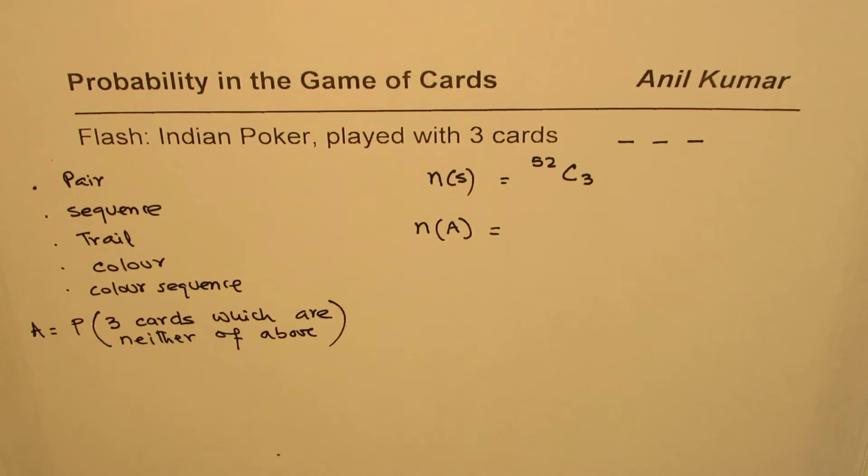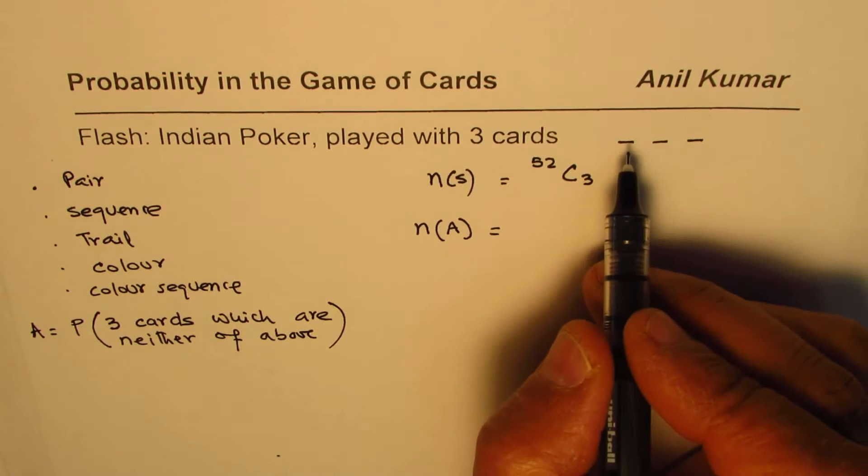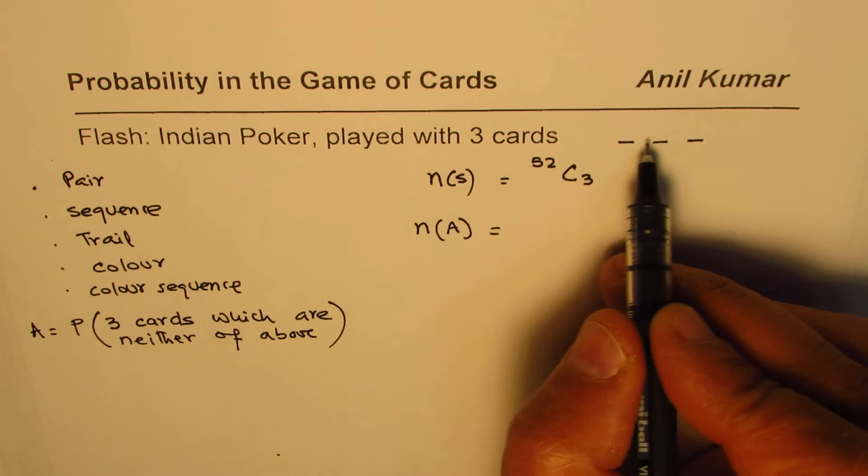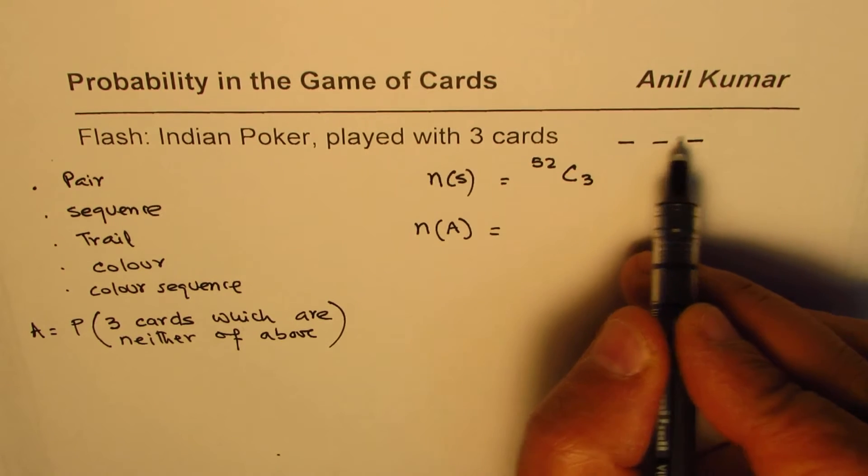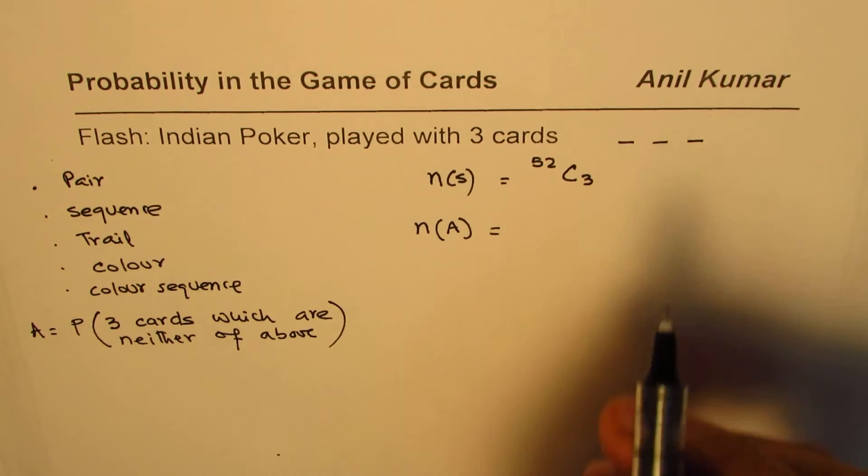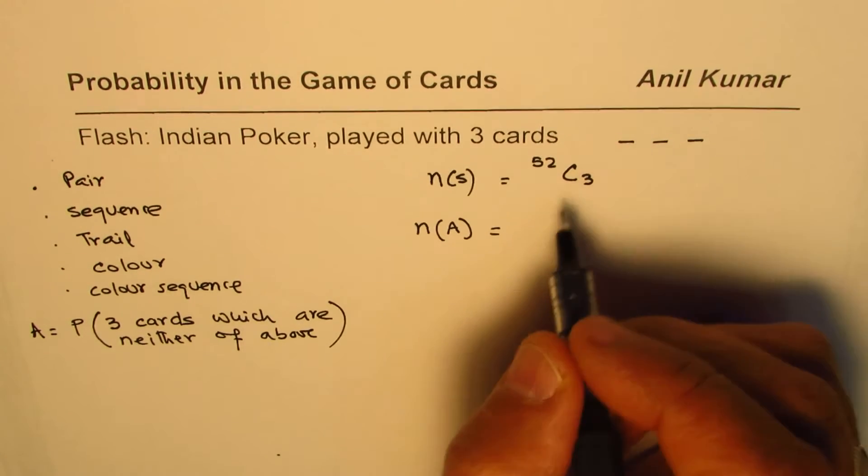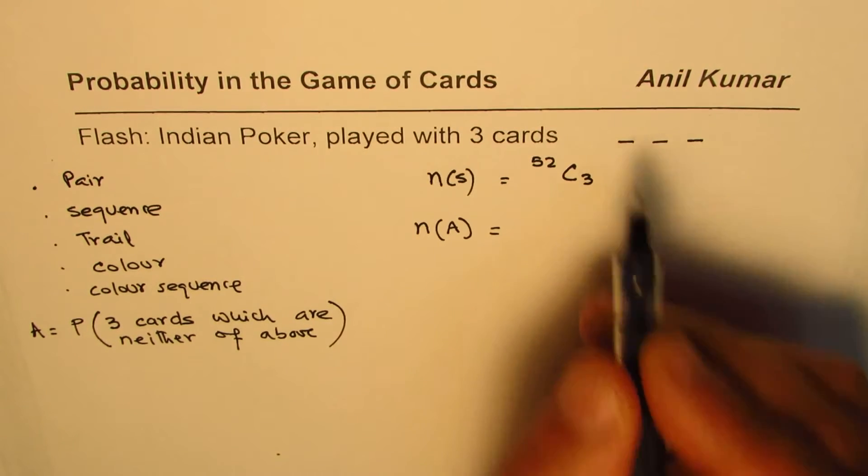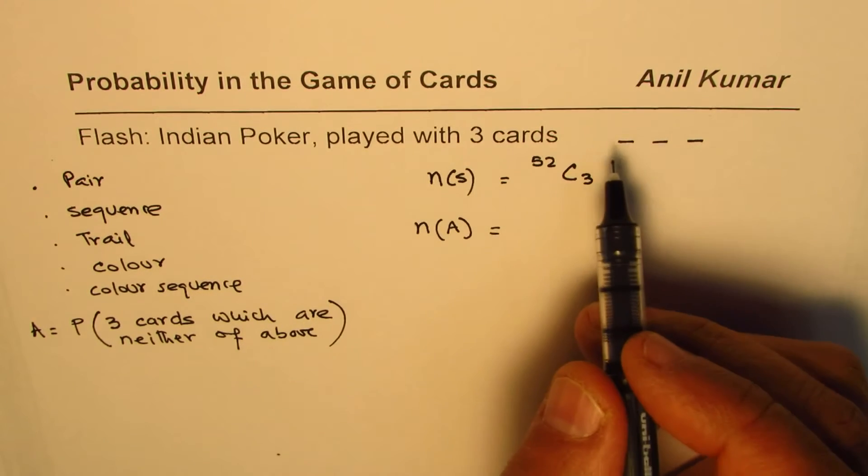Let's find the favorable outcomes first, where the card is not a pair, not a sequence, not a trail, not a color or a color sequence. Well, in that case what we have is that we are selecting any out of 13.